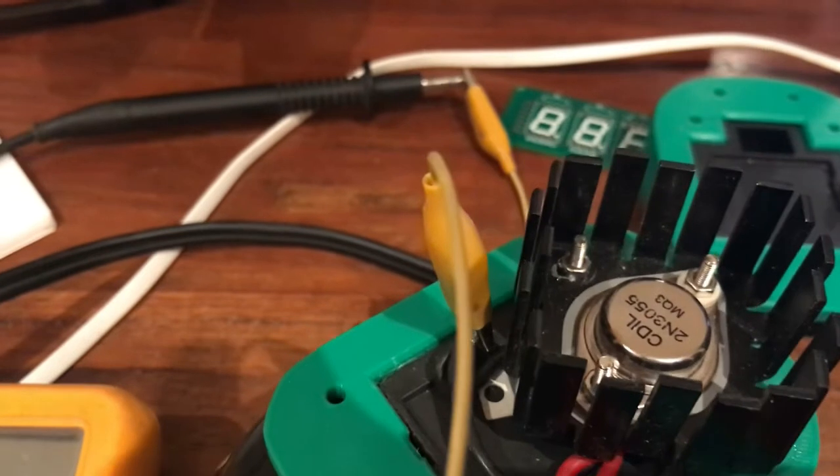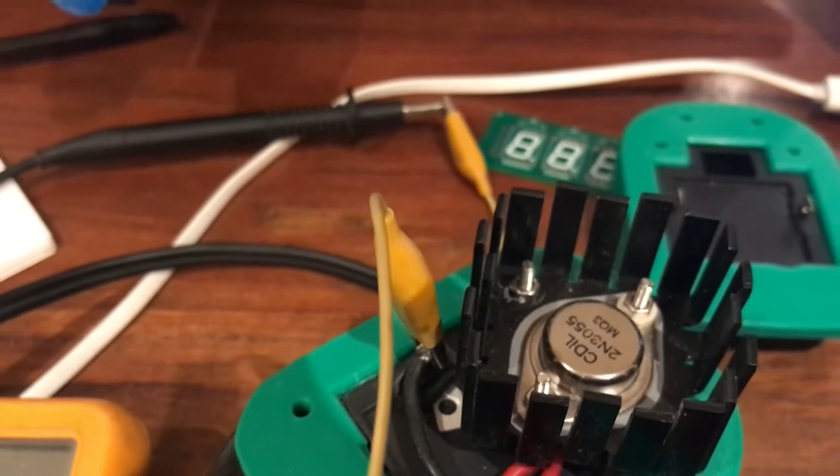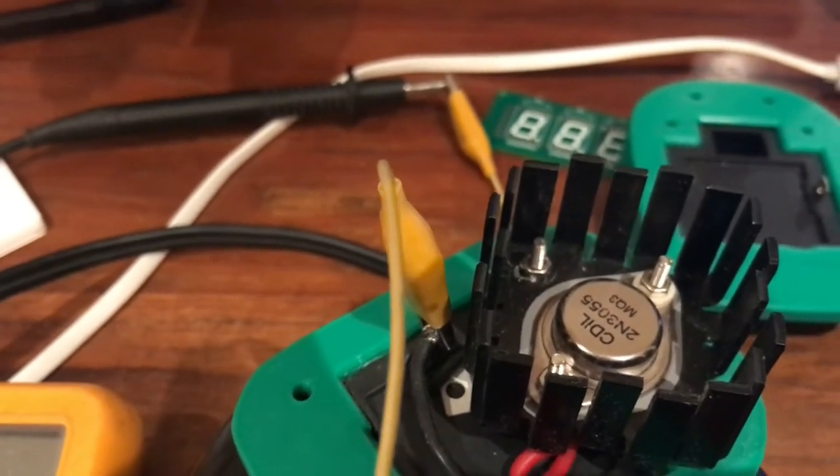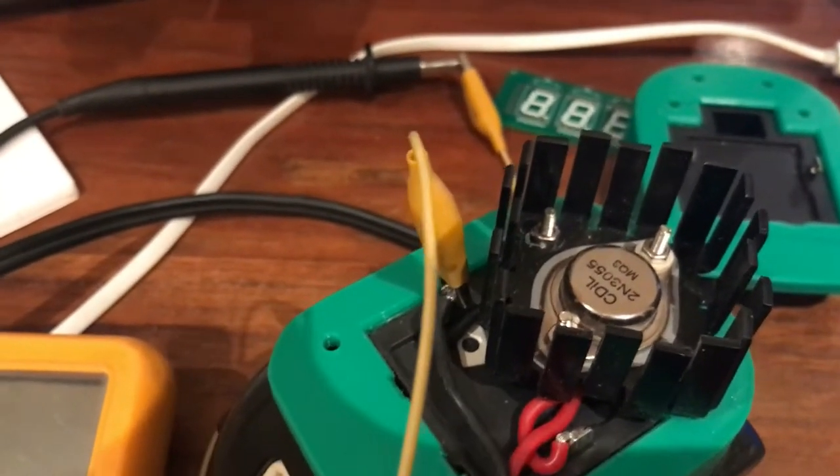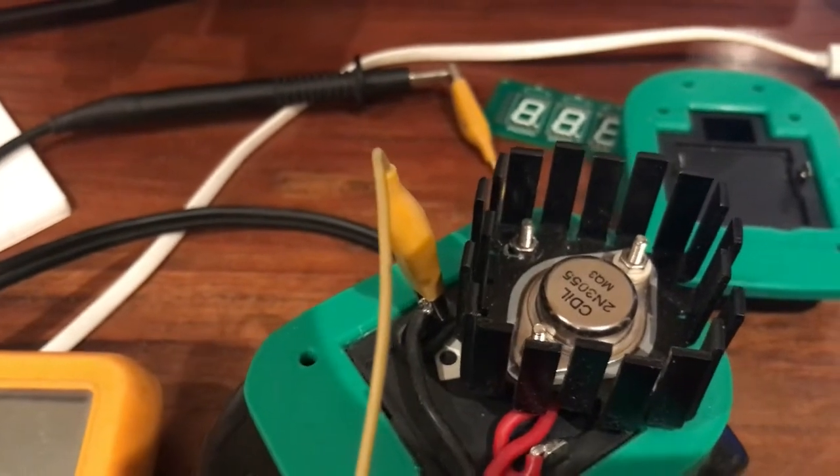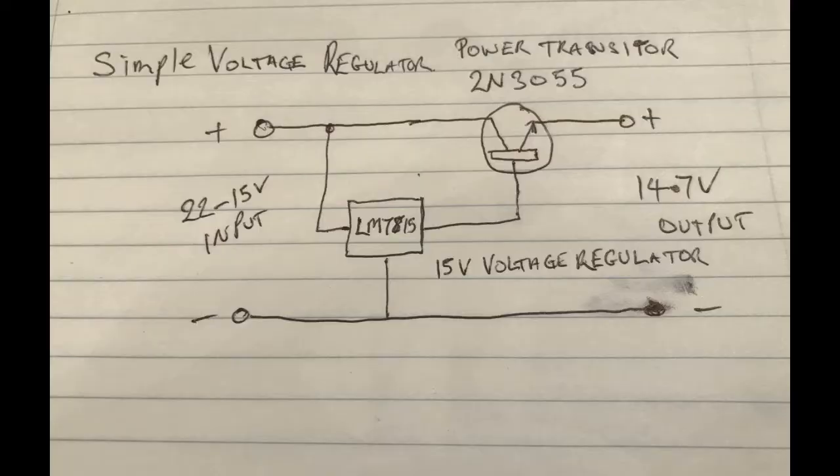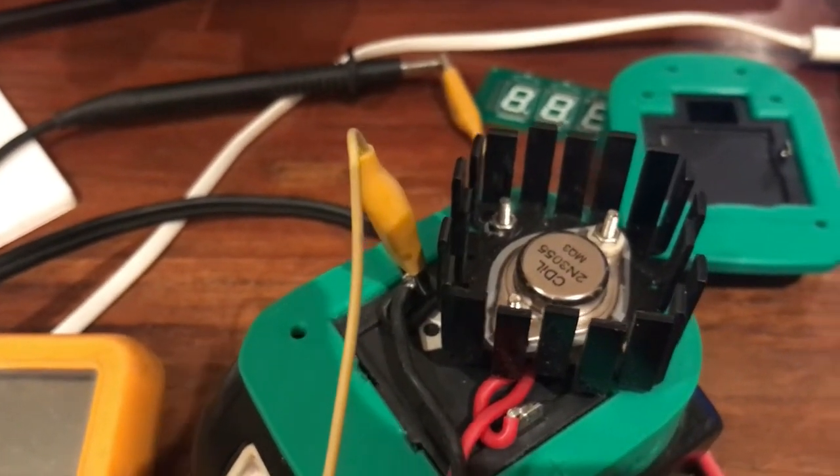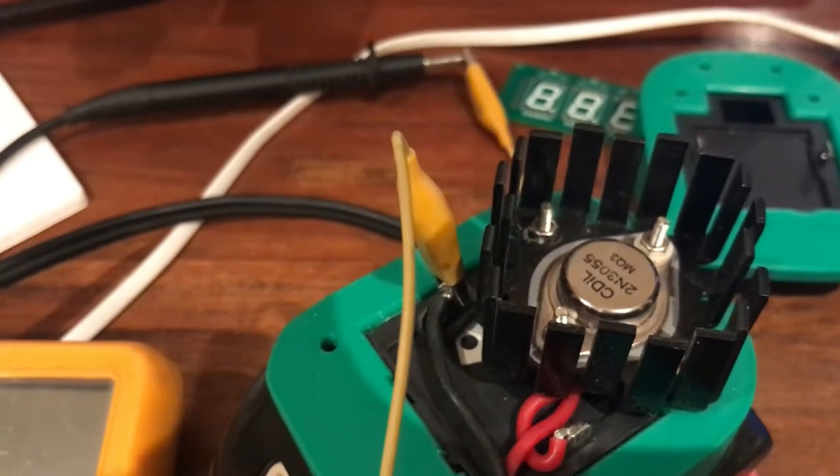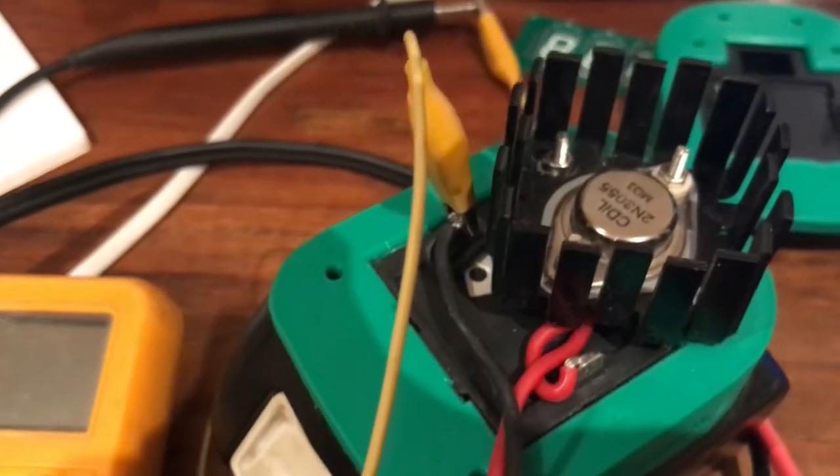Now I've used a real old school power transistor, a 2N3055. I was using these 40 years ago when I was at college doing electronics. It's a very simple circuit where you tie the base of the power transistor to the output of the 15 volt regulator, and it will give you a 14.7 volt as we saw a moment ago output which is regulated.